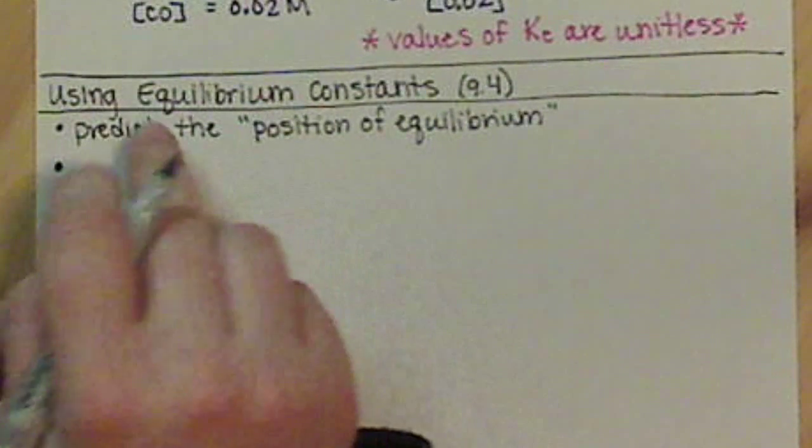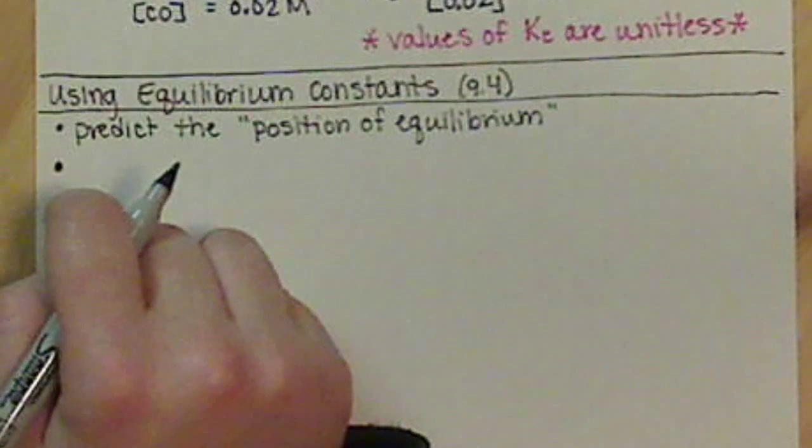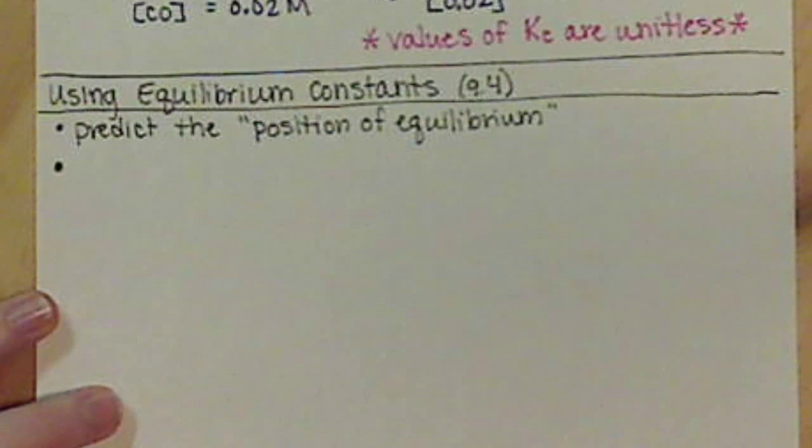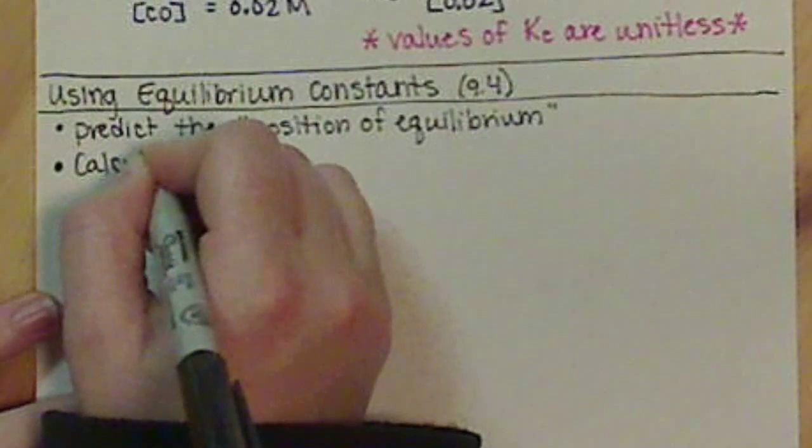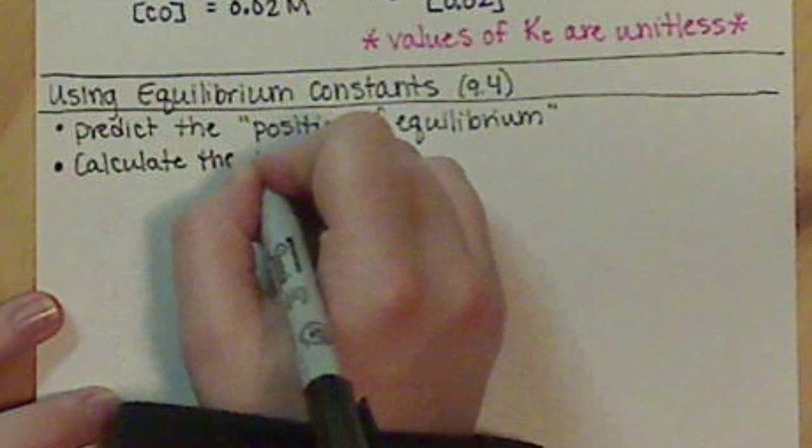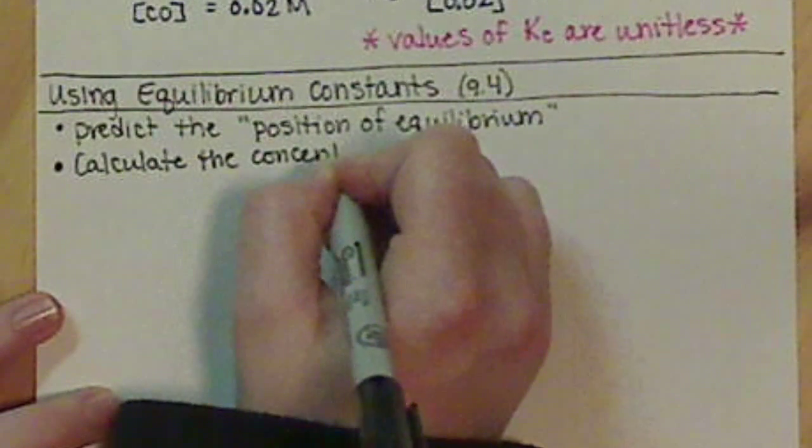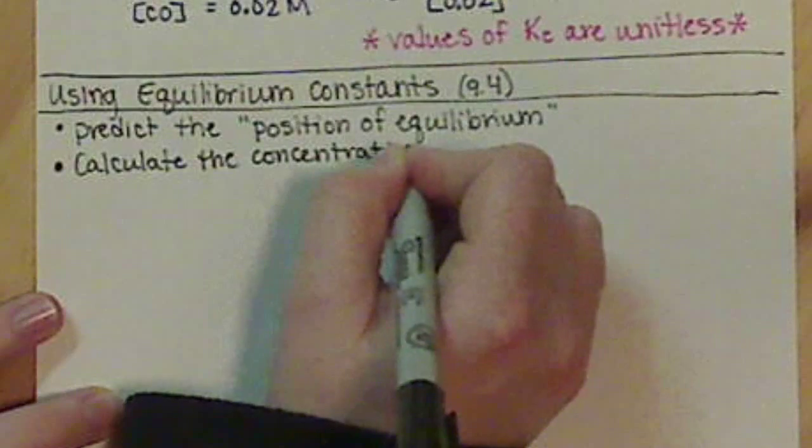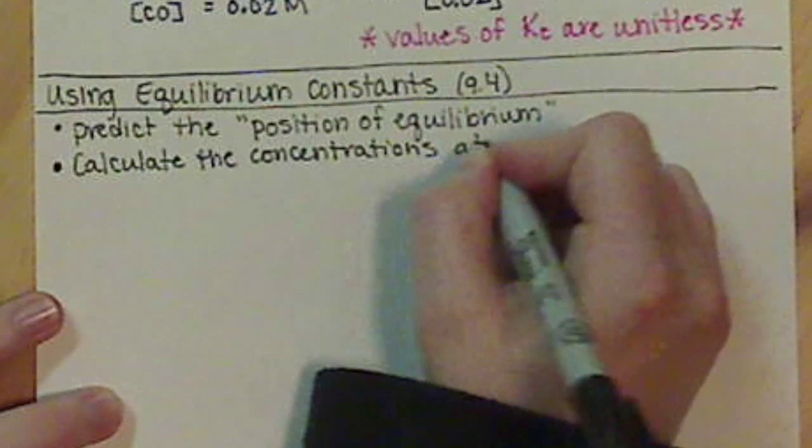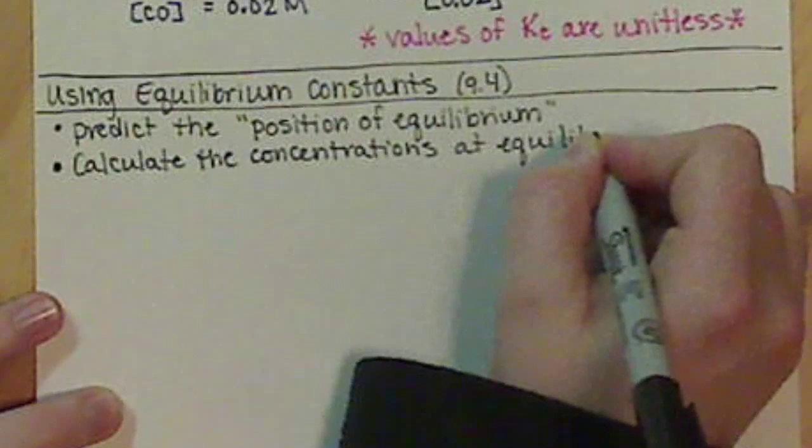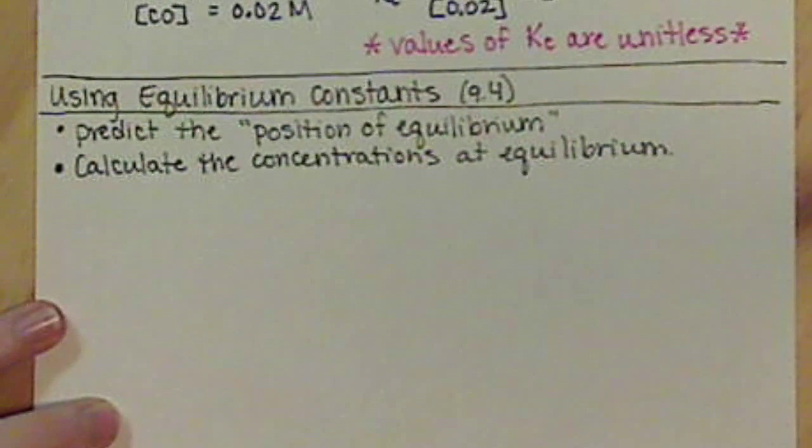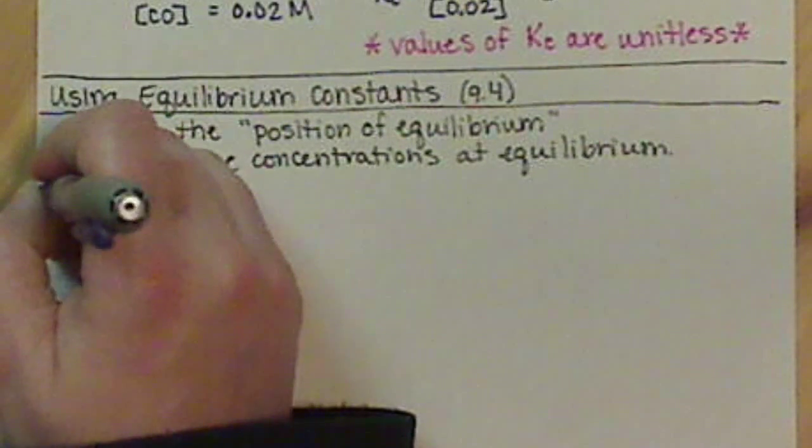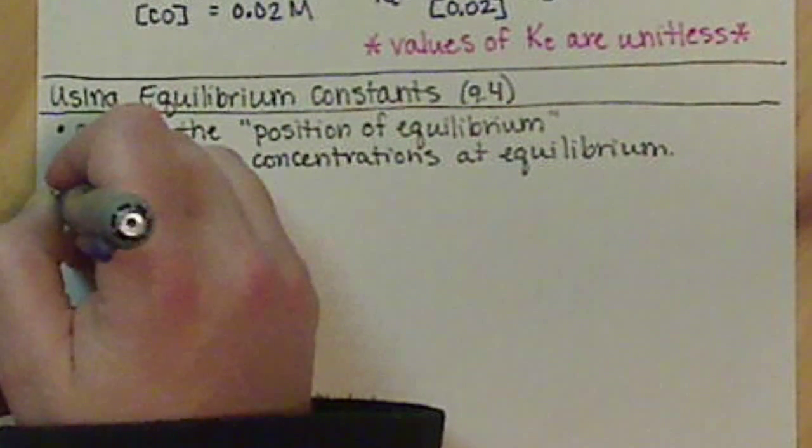The other way that we can use our equilibrium constants is to calculate the concentrations of our reactants or products at equilibrium. So let's first look at this position of equilibrium.